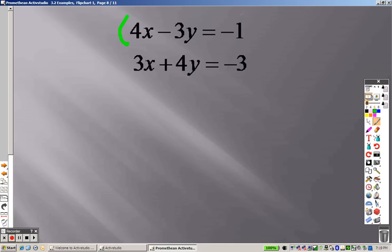To solve this one, just do the method, like I said, the very first method. Take whatever is on the top, multiply it by the bottom. Whatever is on the bottom, take the opposite. So negative 3 times 4 is negative 12x. Negative 3 times negative 3 is positive 9y. Negative 3 times negative 1 is positive 3. On the bottom, 4 times 3 is positive 12x. 4 times 4 is positive 16y. 4 times negative 3 is negative 12. The 12s cancel out.